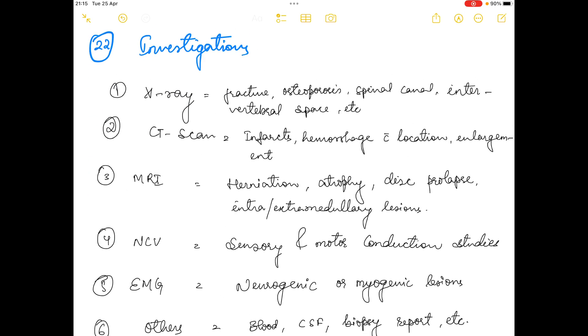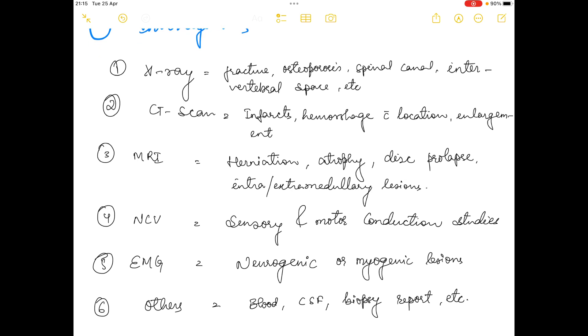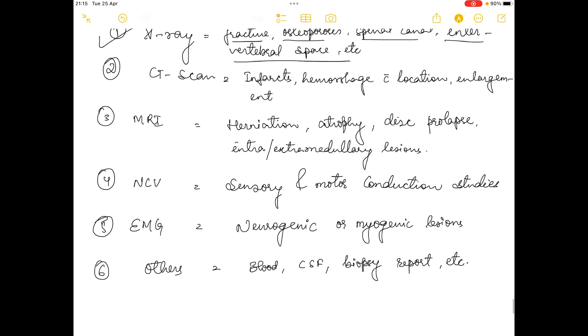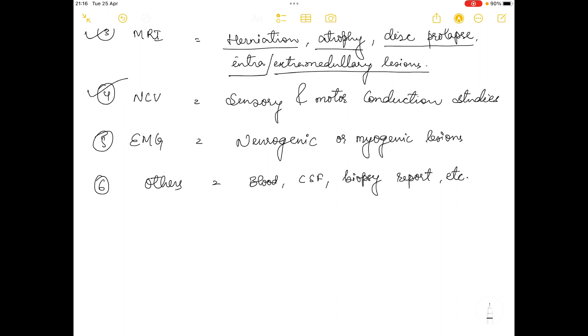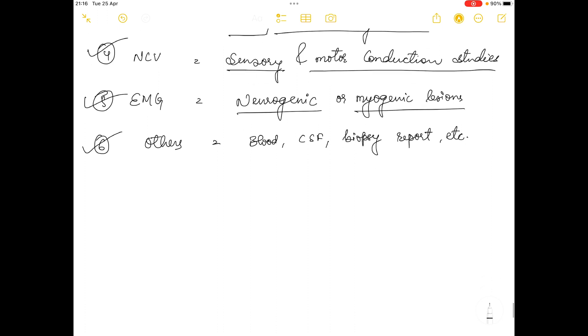The last one is investigation, clinical or radiological investigation. First is X-ray, usually done in fracture, osteoporosis, spinal canal issues, intervertebral spaces, etc. Next is CT scan, done in case of infarction, hemorrhage with location and enlargement. Third is MRI, done in case of herniation, atrophy, disc prolapse, intra or extra medullary lesion. Fourth is NCV, which is nerve conduction velocity, done in case of sensory and motor conduction studies. EMG is usually performed in neurogenic or myogenic lesions. There are other investigations too such as blood, CSF, biopsy report, etc.